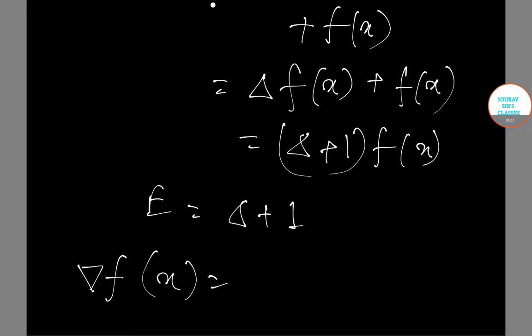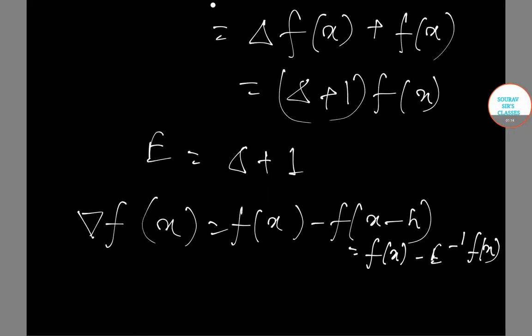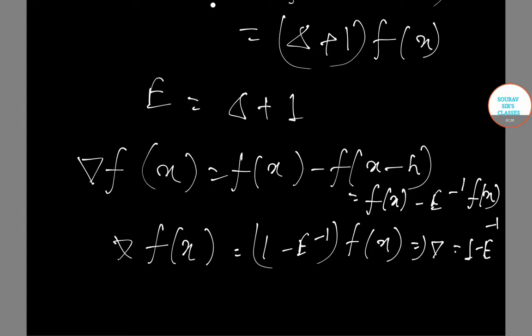Del f(x) equals f(x) minus f(x-h), which equals f(x) minus E to the power minus 1 f(x). This gives us del f(x) equals (1 - E to the power minus 1)f(x), that means del equals 1 minus E to the power minus 1.